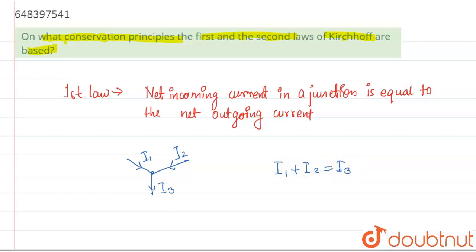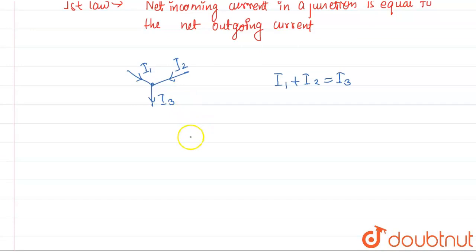This is what current basically is: current is charge per unit time. So this is basically dependent on the law of conservation of charge.